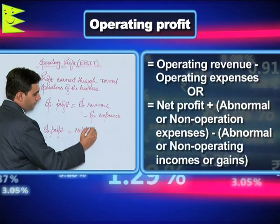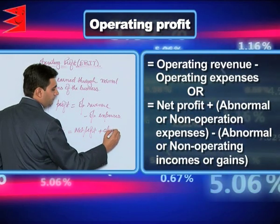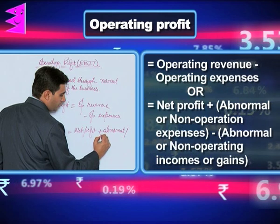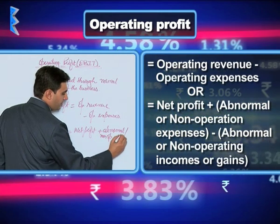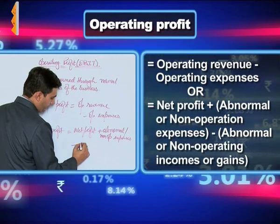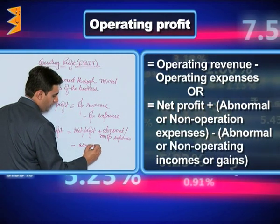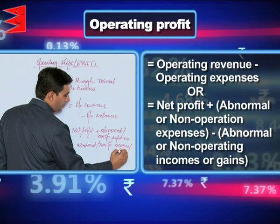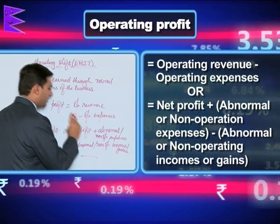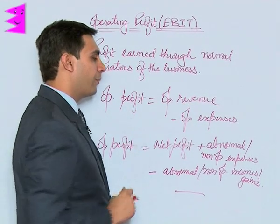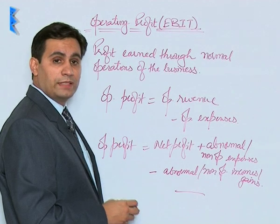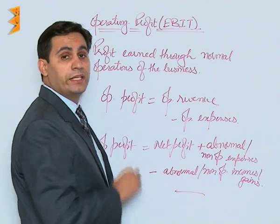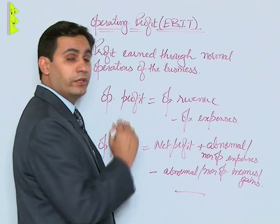...non-operating expenses, that is abnormal or non-operating expenses, minus any abnormal or non-operating income. The direct formula involves deducting operating expenses out of operating revenues. The indirect formula involves adding back abnormal or non-operating expenses and deducting any abnormal incomes or gains that may have been included in the calculation of net profit.